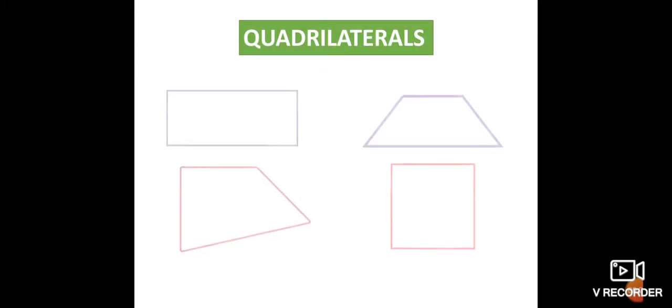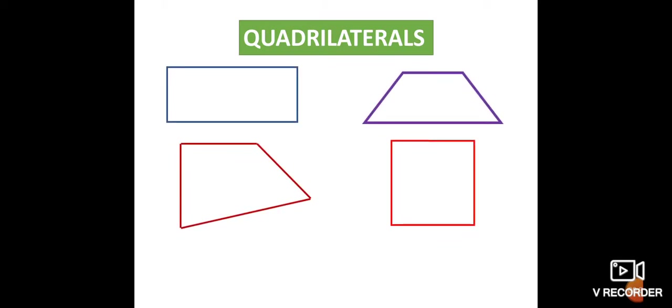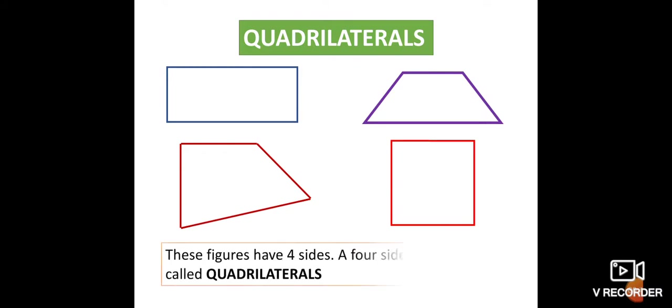First, we have to study quadrilaterals. You can see here four shapes. Any speciality here? Yes, these four shapes have four sides — only four sides. These figures have four sides. A four-sided polygon is called a quadrilateral.